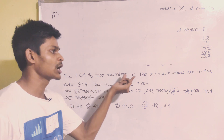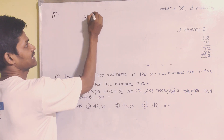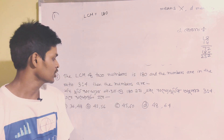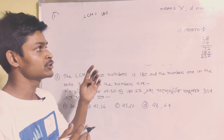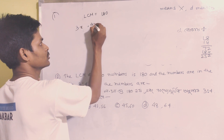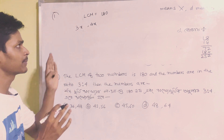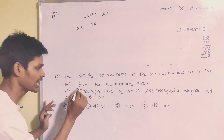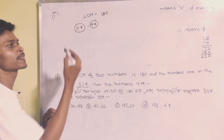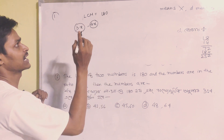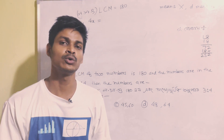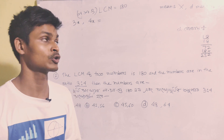Two numbers are given whose LCM is 180, and the numbers are in the ratio 3:4. Since the ratio is 3:4, let the numbers be 3x and 4x.